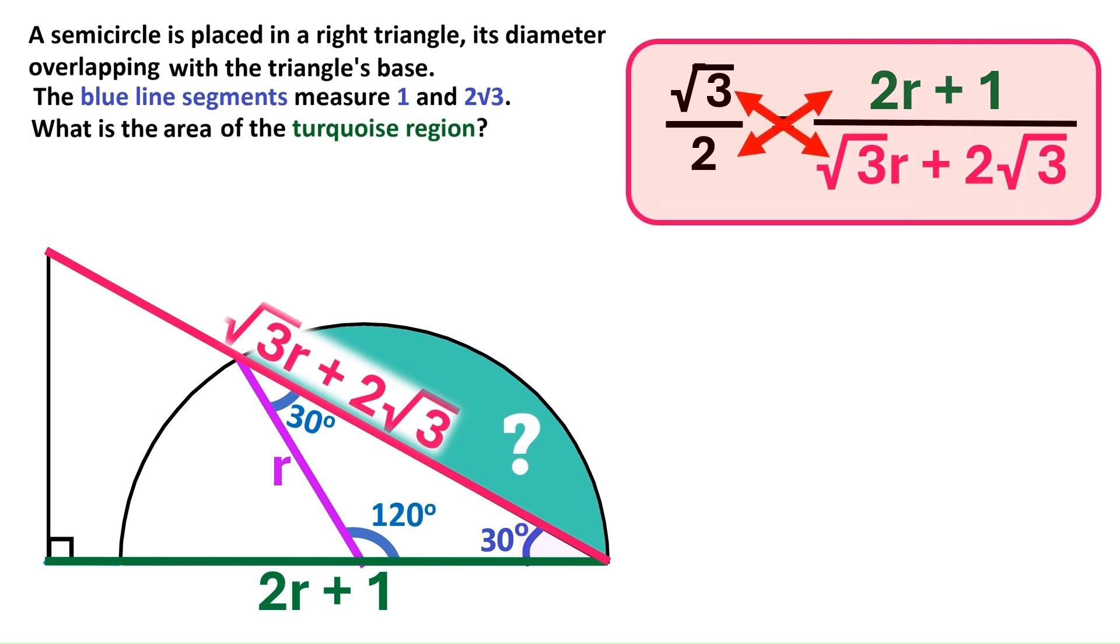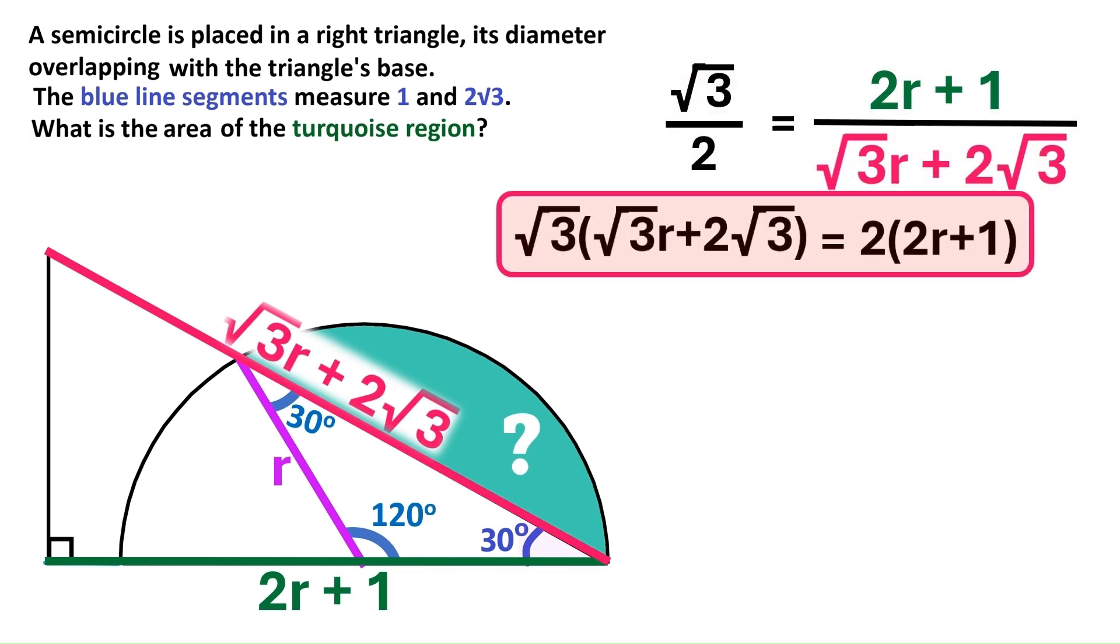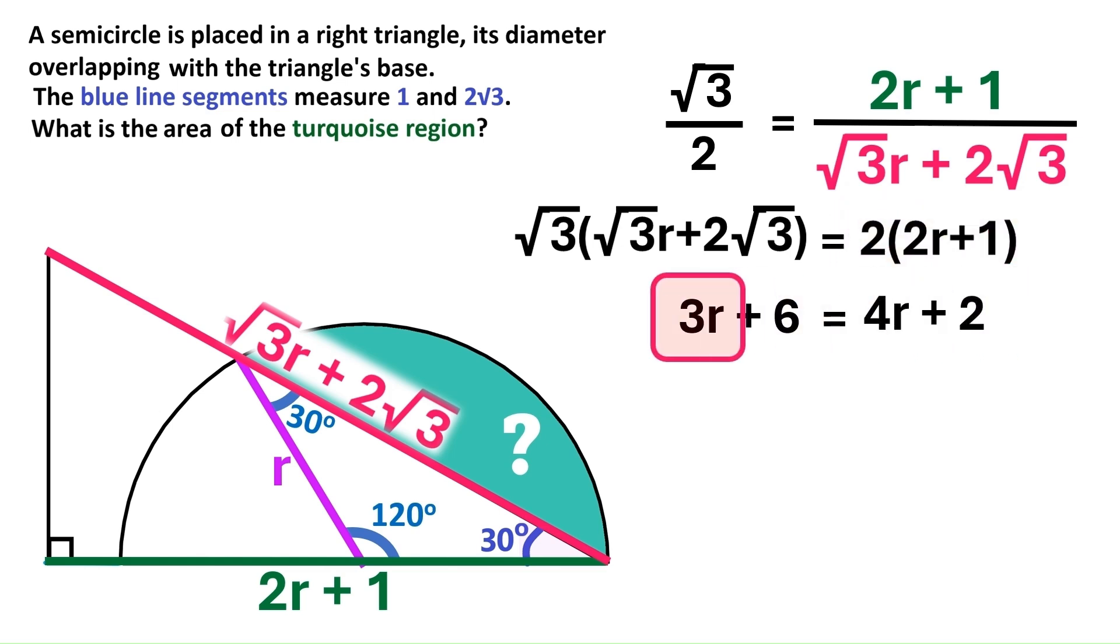Now we can cross multiply all of this stuff. Let's open this bracket first. Radical 3 times radical 3 R is 3R. And radical 3 times 2 times radical 3 is 3 times 2 which equals 6. Now let's take this 3R to the other side where it becomes minus 3R. And these two add up to 1R. And we'll also take this plus 2 to this side and it becomes minus. And 6 minus 2 is 4. So we've got R equals 4.